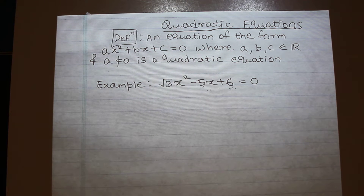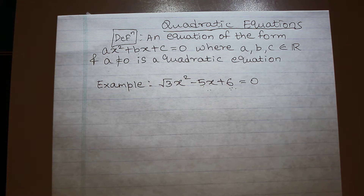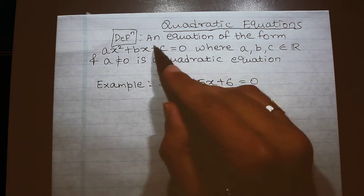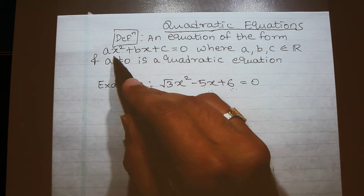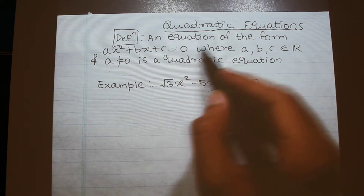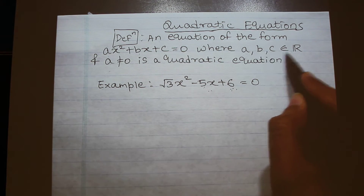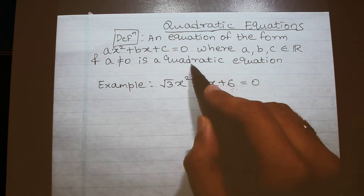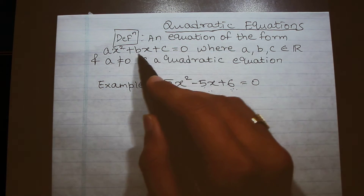Hello everyone, today we will learn a very important topic in algebra: quadratic equations. In mathematics, definitions play a very important role, but we tend to give less importance to definitions. So let us look at the definition of a quadratic equation: an equation of the form ax² + bx + c = 0, where a, b, and c belong to the set of real numbers and a ≠ 0.